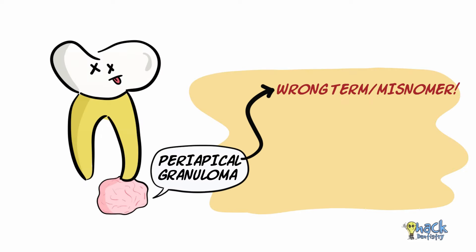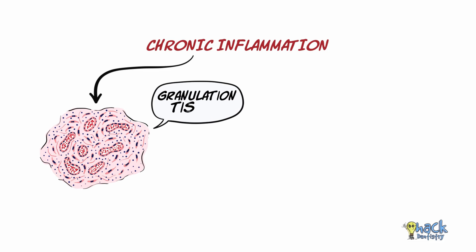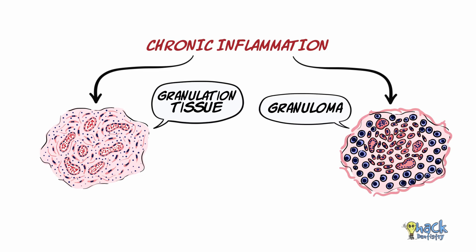Periapical granuloma is wrongly termed granuloma and is actually a localized mass of chronic inflamed granulation tissue. While granulation tissue and granuloma are both a product of chronic inflammation, they are entirely different types of inflammatory tissue reactions.